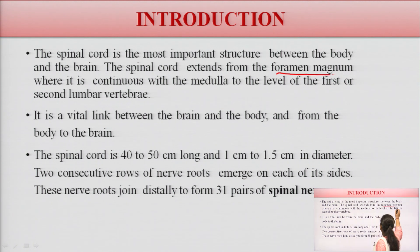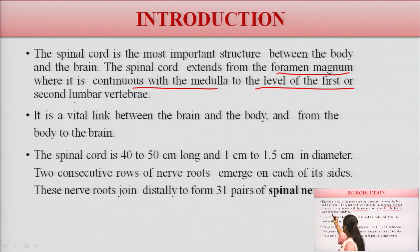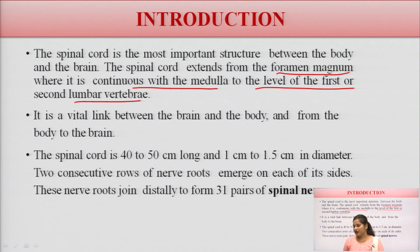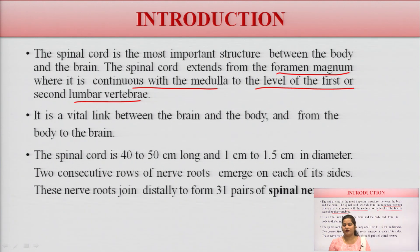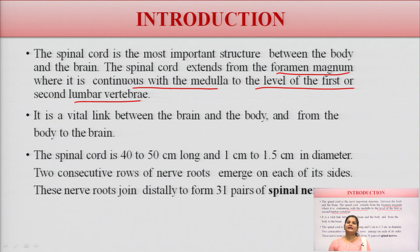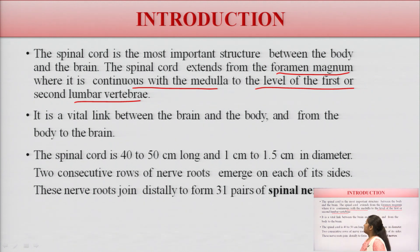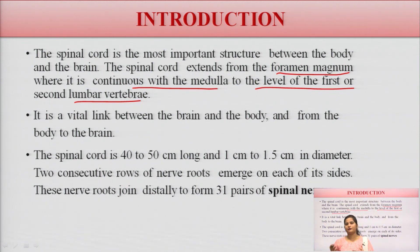The spinal cord extends from the foramen magnum, where it is continuous with the medulla, down to the level of the first or second lumbar vertebrae. There are five types of vertebrae: cervical, thoracic, lumbar, sacral, and coccyx. It is a vital link — a bridge — between the brain and the body.